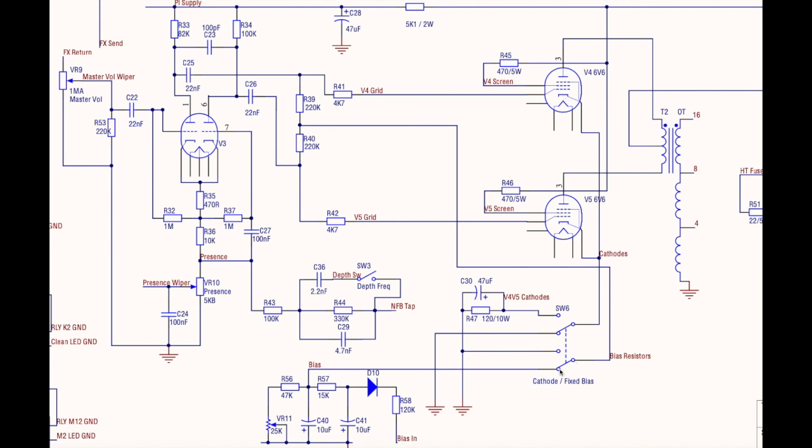When we switch over to cathode bias, you can imagine this switch here. This pole here is going to move across to this one and this one is going to move up to here. It's a double pole double throw switch, so it switches two poles simultaneously. What happens now is that the grids here, you're actually going to set them to ground. So rather than the negative voltage that we had in fixed bias, these now come down here and you can see when this switches in the up position and the cathode bias position, they're set to ground.